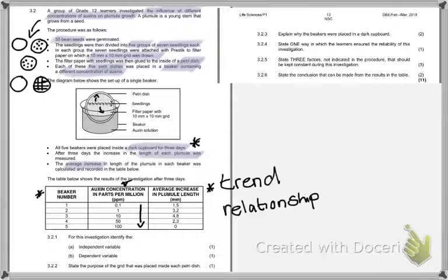Tables often reveal the trend or the relationship between the variables. What is the trend, what is the relationship? There seems to be an increase in length as we approach 10 parts per million. We get to our highest amount at 10 parts per million in the middle. Then as we progress in the amount of parts per million in the auxin, it seems to be decreasing in amount. We get to the peak amount, the optimum amount, and then it decreases after that.